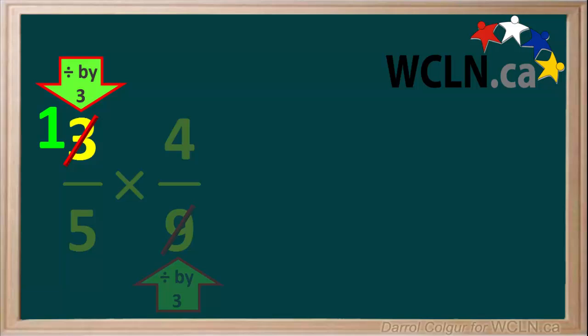And we'll divide both of them by 3. 3 divided by 3 is equal to 1, so we'll write in a 1 by the crossed out 3. And 9 divided by 3 is equal to 3, so we'll write a 3 by the crossed out 9.